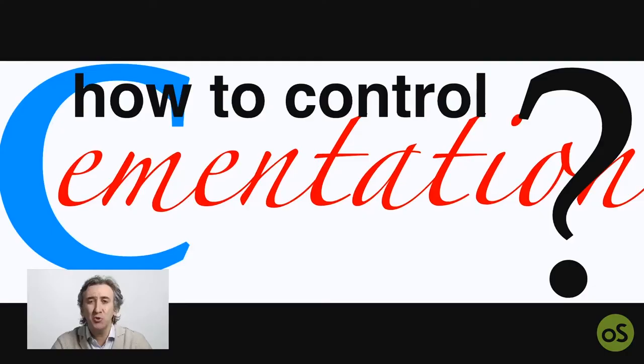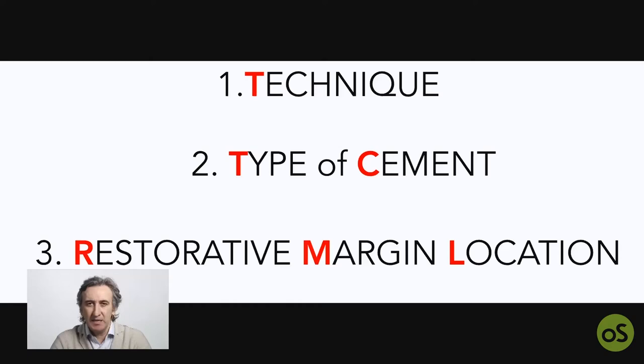How do we control cementation? We control cementation through techniques, the type of cement, and most of all through the restorative margin location — where we locate the margin design, the finish line of the crown inside the sulcus, and that is critical. There are many techniques and they all work.